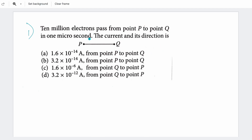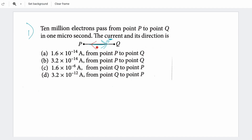The first problem: 10 million electrons pass from point P to point Q in one microsecond. What is the current and its direction? Electrons are moving from P to Q. I already told you that the electron is negative — if the electron moves in any direction, the current is opposite. So current comes from Q to P. Electrons move from P to Q, so current is Q to P.